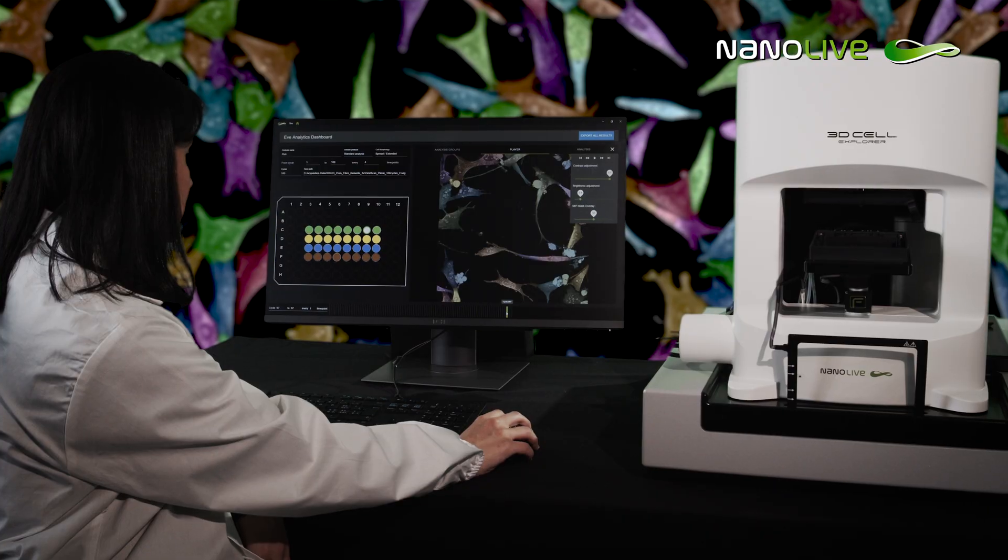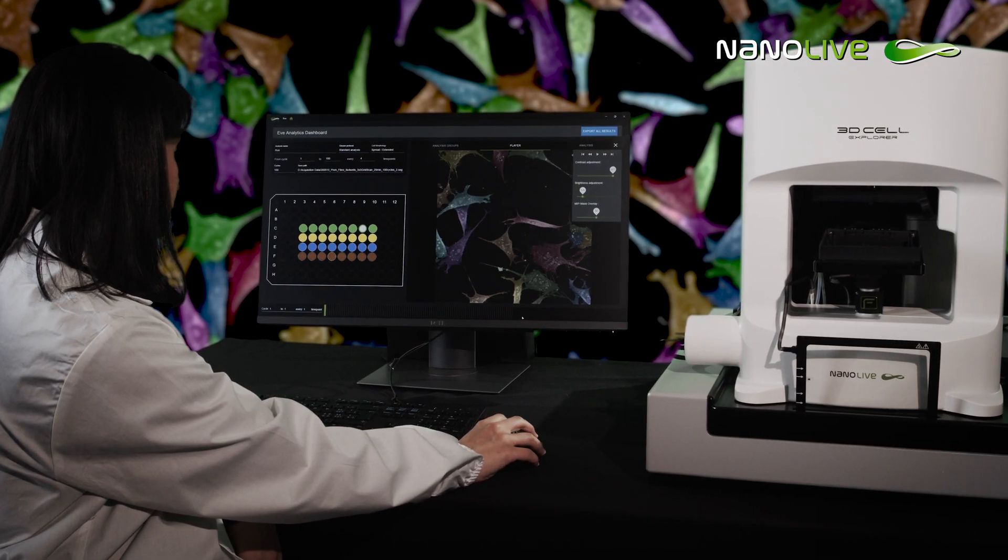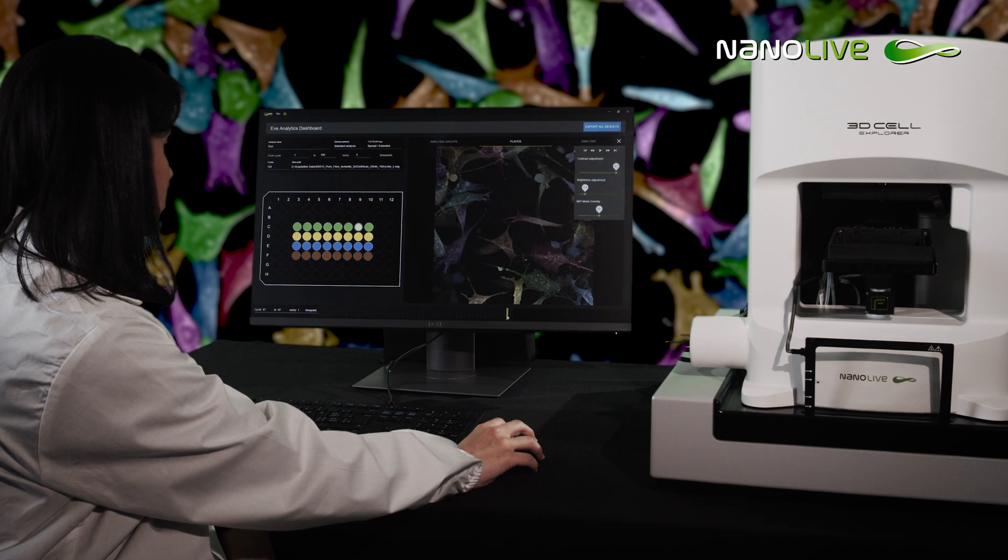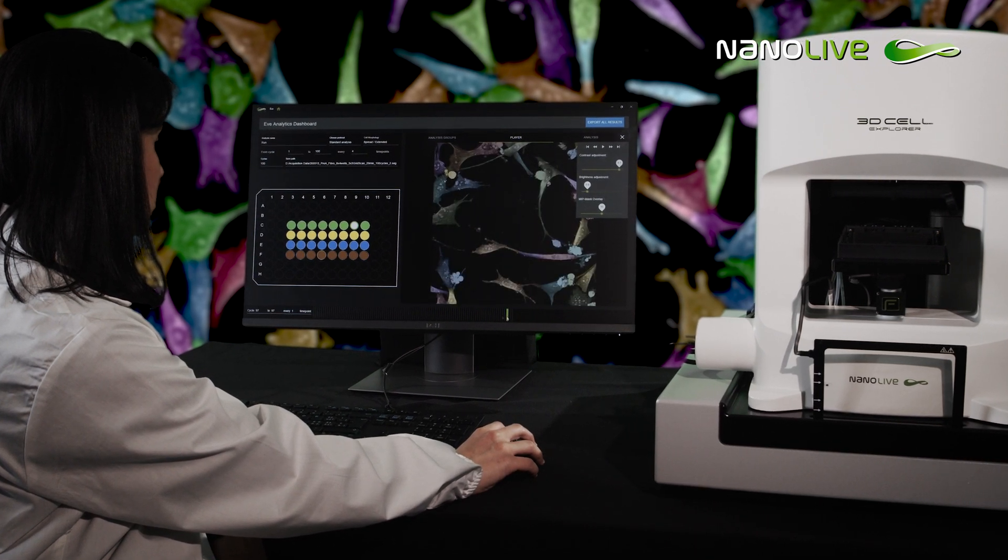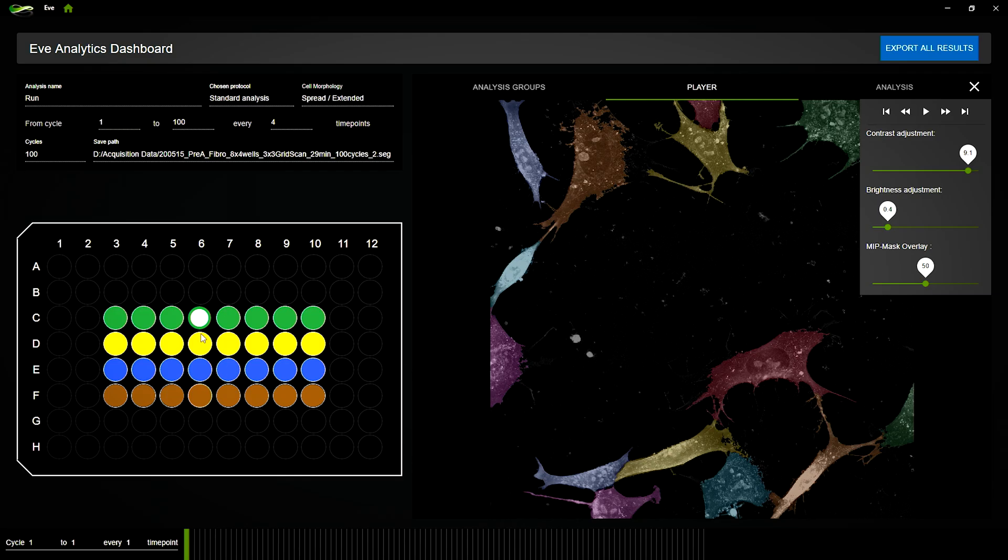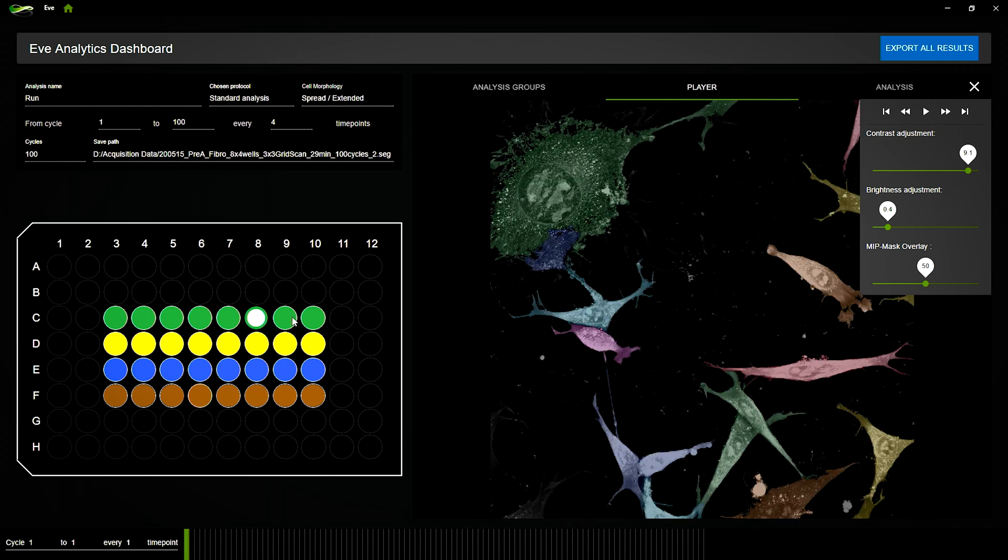Once you've found what you're looking for, you can proceed to analyze it. NanoLife's analysis software, EVE Analytics, delivers robust and high-precision segmentation masks of your cells, whether they are sparsely or densely populated, over long periods of time.